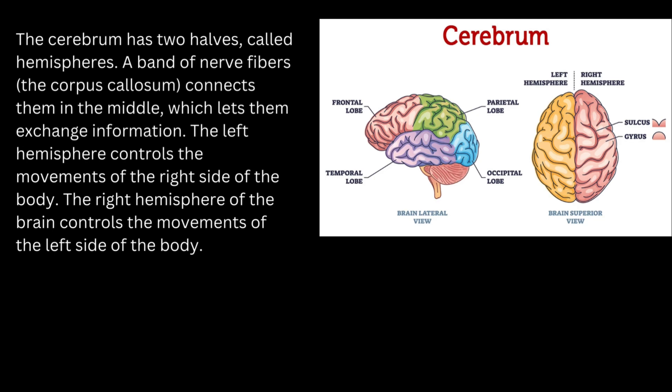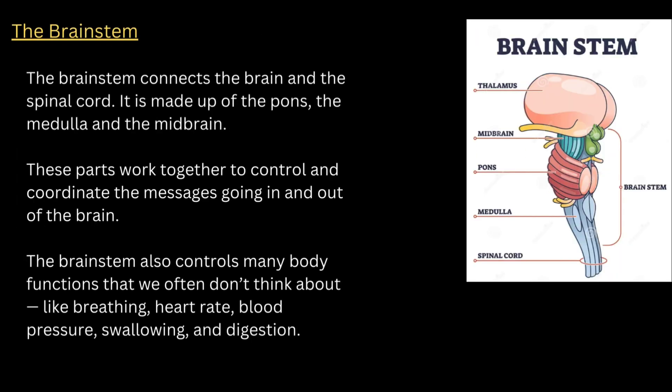The brainstem connects the brain and the spinal cord. It is made up of the pons, the medulla, and the midbrain. These parts work together to control and coordinate the messages going in and out of the brain. The brainstem also controls many body functions that we often don't think about, like breathing, heart rate, blood pressure, swallowing, and digestion.